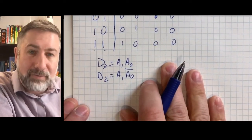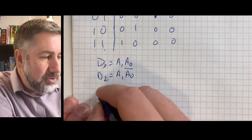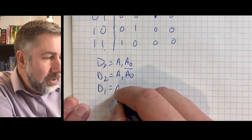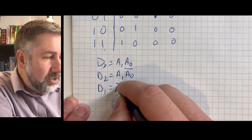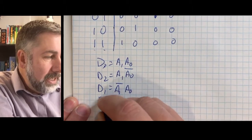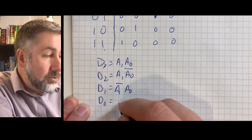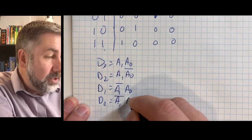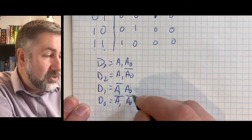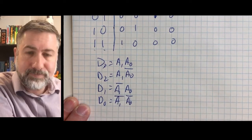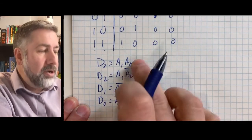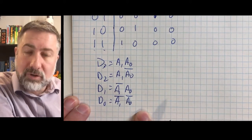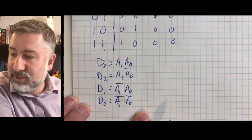We're just writing out our minterms for this function. D1 is true when A1 is false and A0 is true. And D0 is true when A1 is false and A0 is false. Four functions, four minterms.